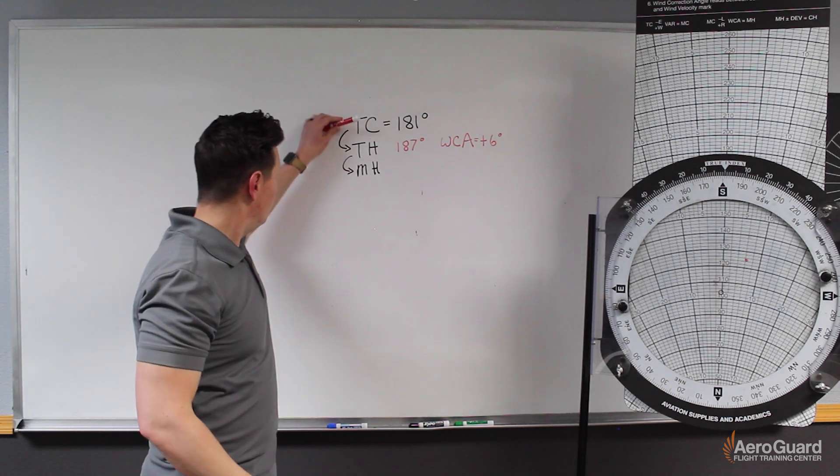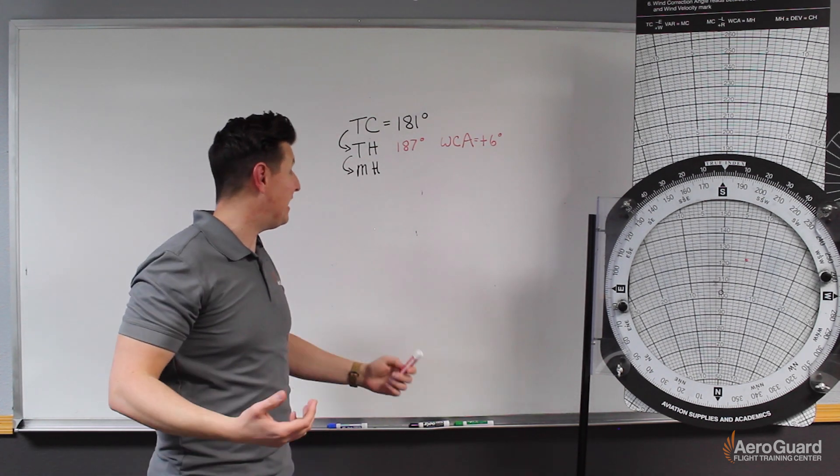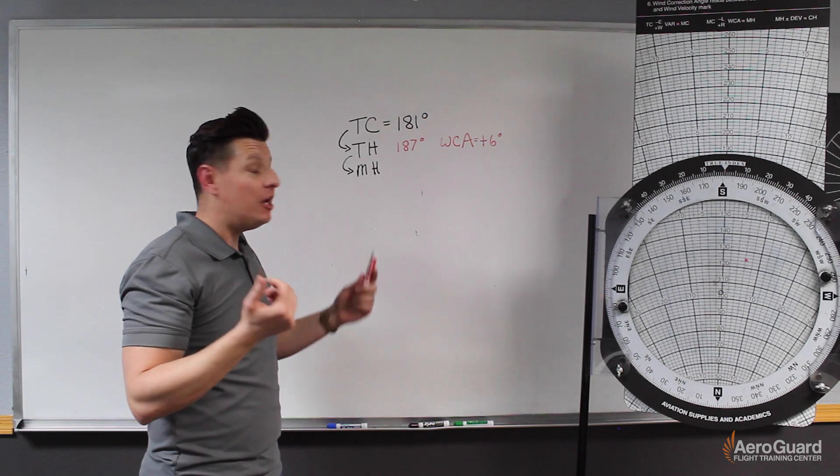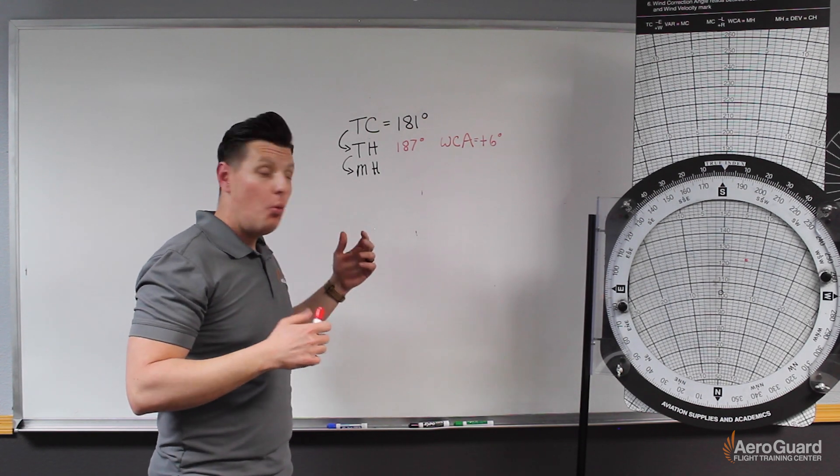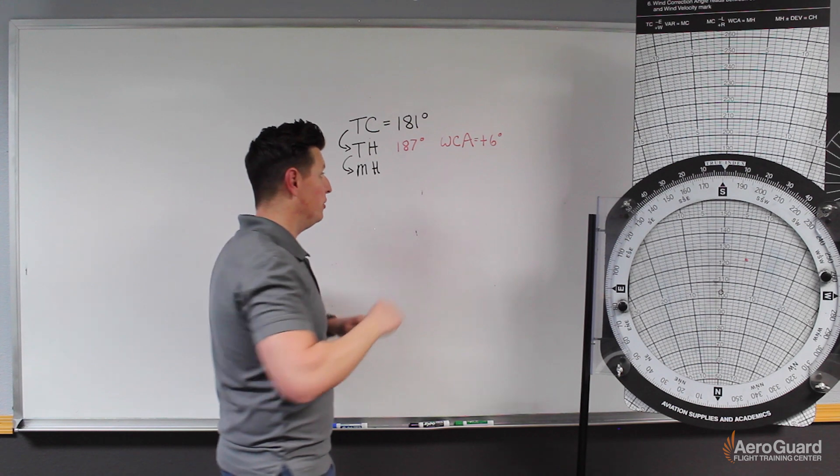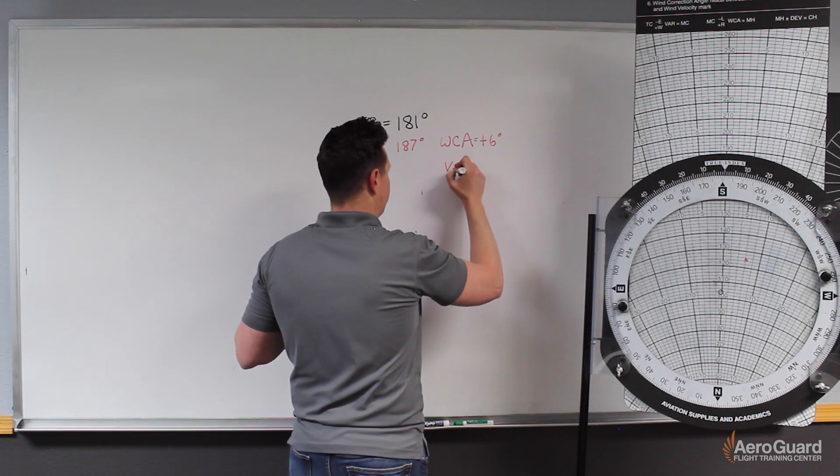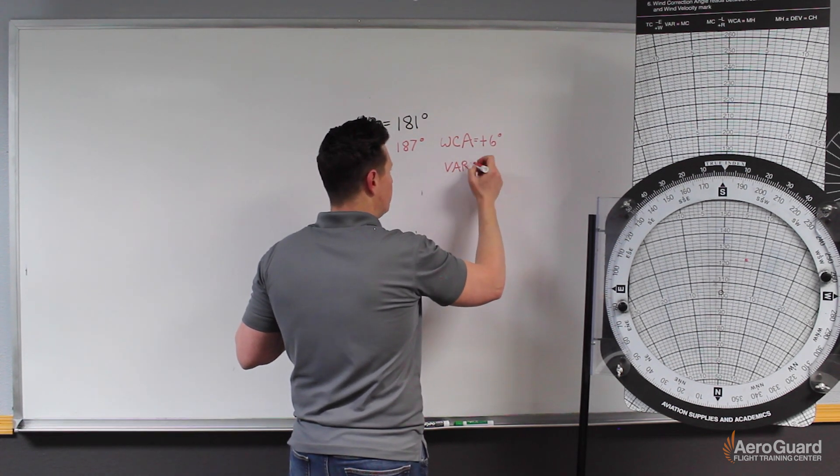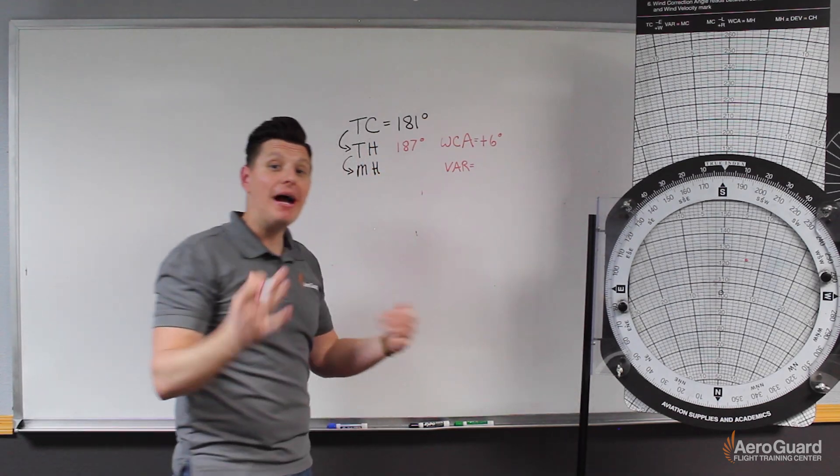Last but not least, we have to make the jump to magnetic heading. In order to do that, what we need to know is magnetic variation. So what is the magnetic variation to adjust for? Let's go back to the chart.